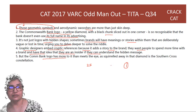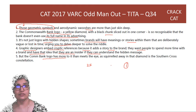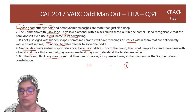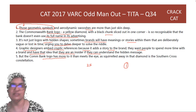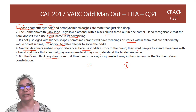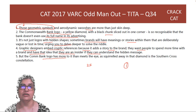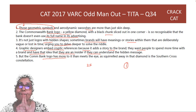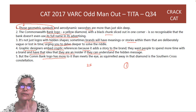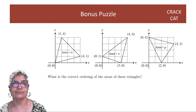It was a very interesting verbal section — great passages and great para summaries. Please practice a lot of verbal; there is really no shortcut. The whole paper is in English, so your maths and DI will also improve if your English comprehension improves. Here is your puzzle for tomorrow morning: find the correct ordering of the areas of these triangles. And here is your reading assignment — a very nice passage.